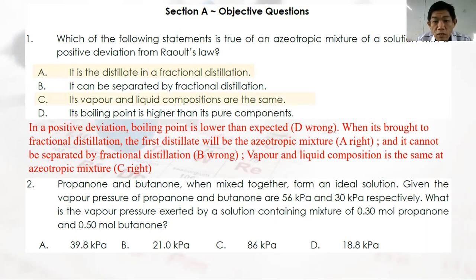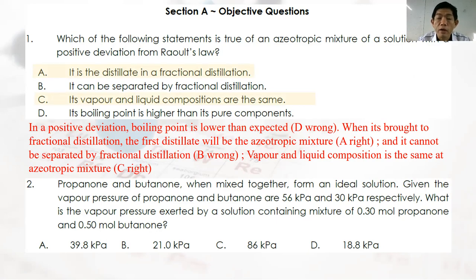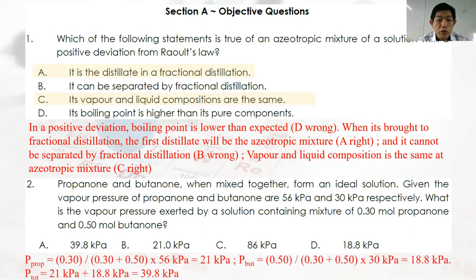Question 2: Propanone and butanone were mixed to form an ideal solution. Vapor pressures of propanone and butanone are 56 kPa and 30 kPa respectively. For a mixture of 0.3 mol propanone and 0.5 mol butanone, calculate the vapor pressure. First calculate the mole fraction. Partial pressure of propanone = (0.3 / 0.8) × 66 = 21 kPa. Partial pressure of butanone = (0.5 / 0.8) × 30 = 18.8 kPa. Total vapor pressure = 39.8 kPa. Answer: A.